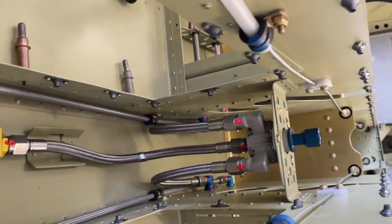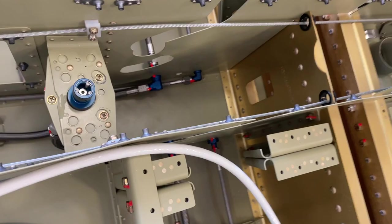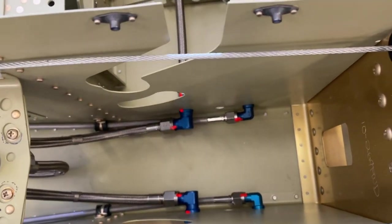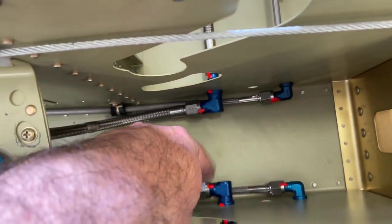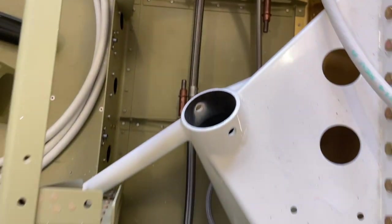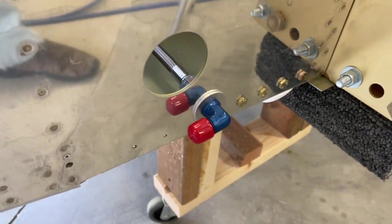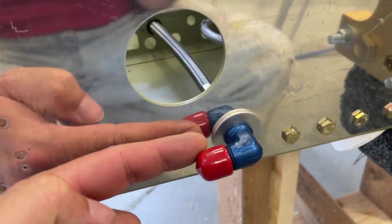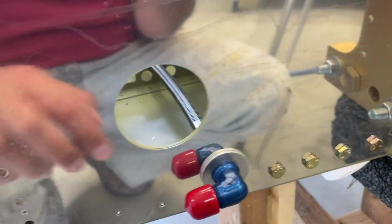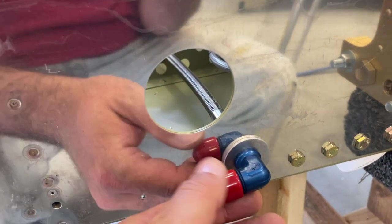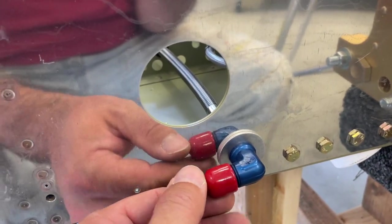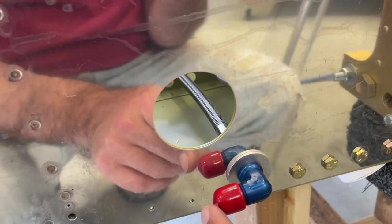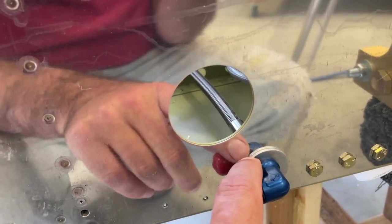The fuel lines all connect to there and then break out into the regular 90 degree fitting that goes in the normal spots through the outside. In the Vans kit, they just have a hose come all the way through with a rubber grommet and plug into the tank. Because I'm doing the wing root filters, you actually need a 90 here.